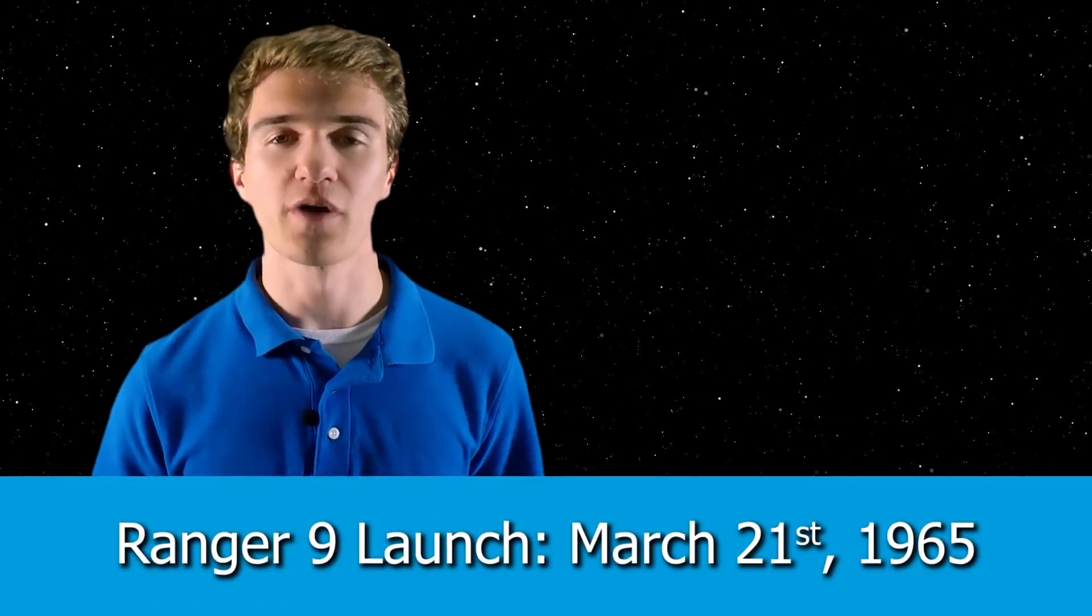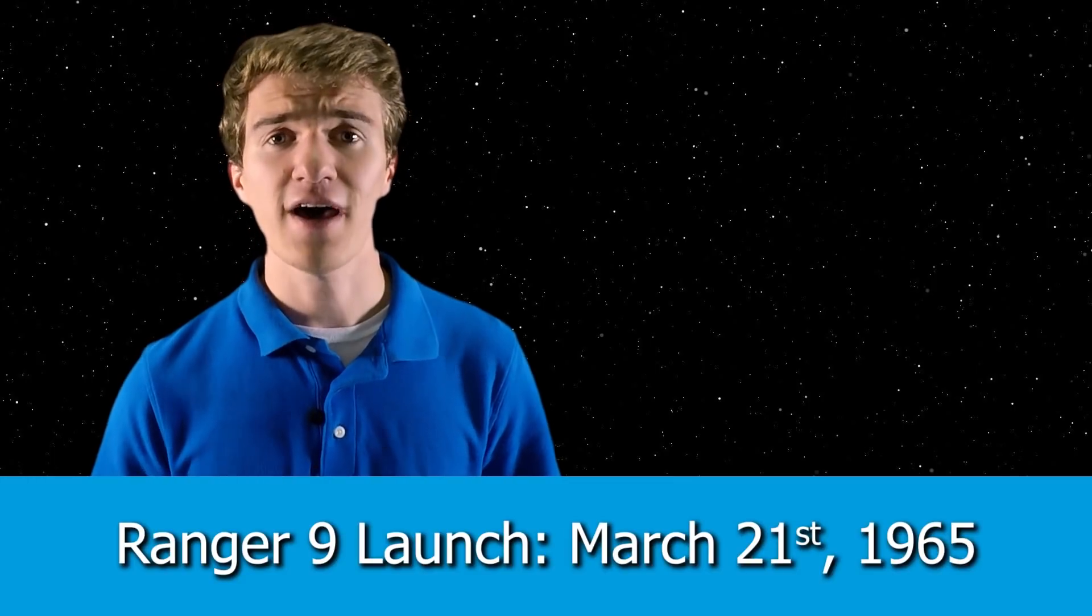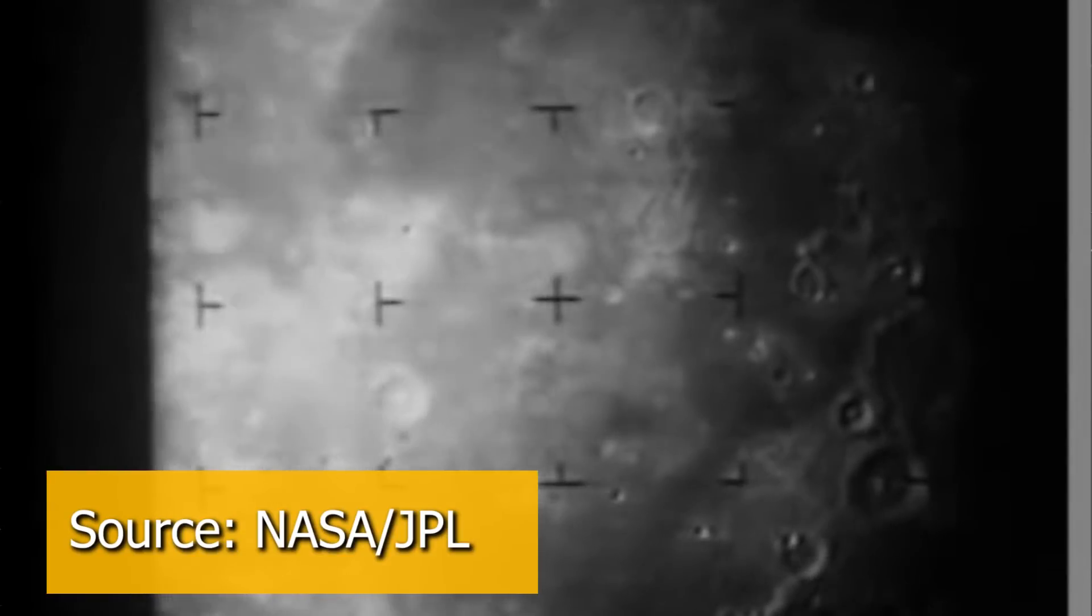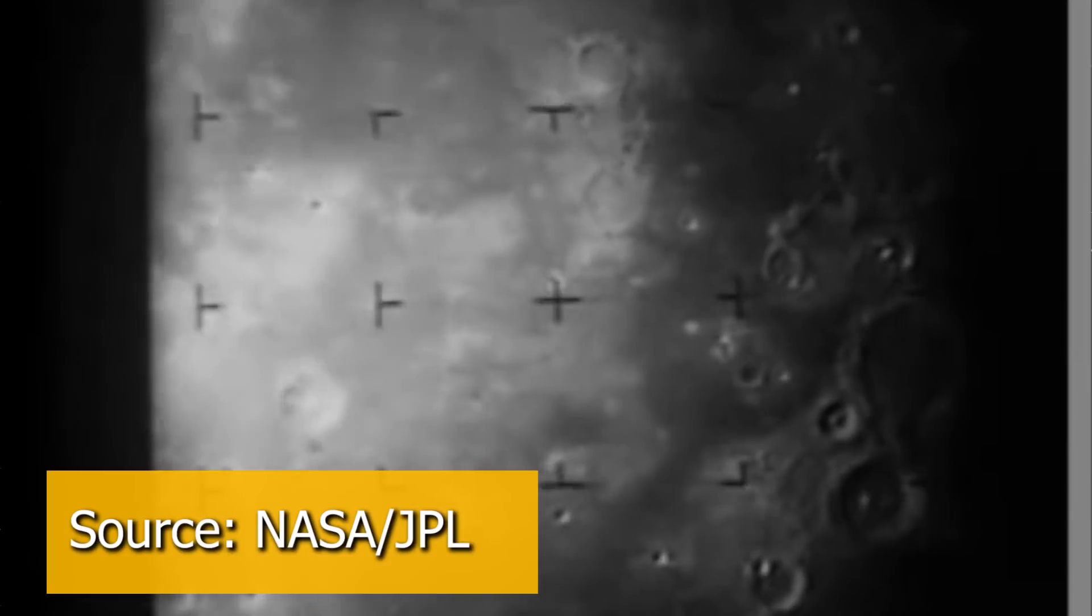After the success of Ranger 8, a month later, on March 21st of 1965, they launched Ranger 9, which was the last of the Ranger missions. And ultimately, it sent back images approaching the surface of the moon, including this really cool video that puts all these images together as it's descending to the surface.